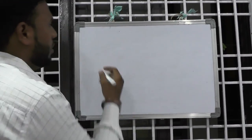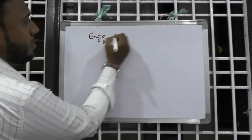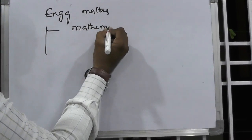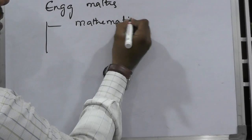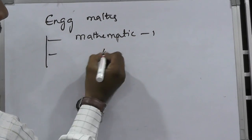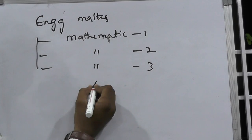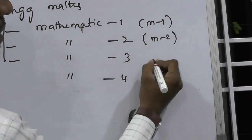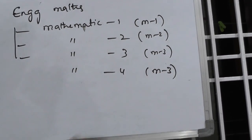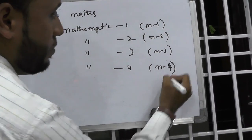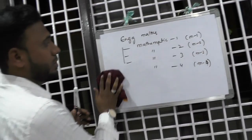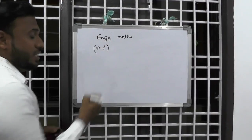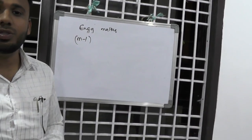Now coming to engineering mathematics, it consists of Mathematics 1, Mathematics 2, Mathematics 3, and Mathematics 4 — that is M1, M2, M3, and M4. In this video, I am going to explain about Engineering Mathematics 1, M1, and the changes in it according to the regulations.